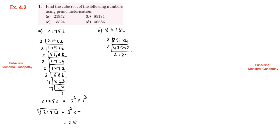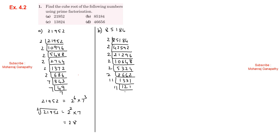Working through the prime factorization: 21952 divided by 2 repeatedly gives factors. 21952 equals 2 power 6 into 11 cube. So cube root of 21952 equals 2 power 2 into 11, which equals 4 into 11, so the answer is 44.